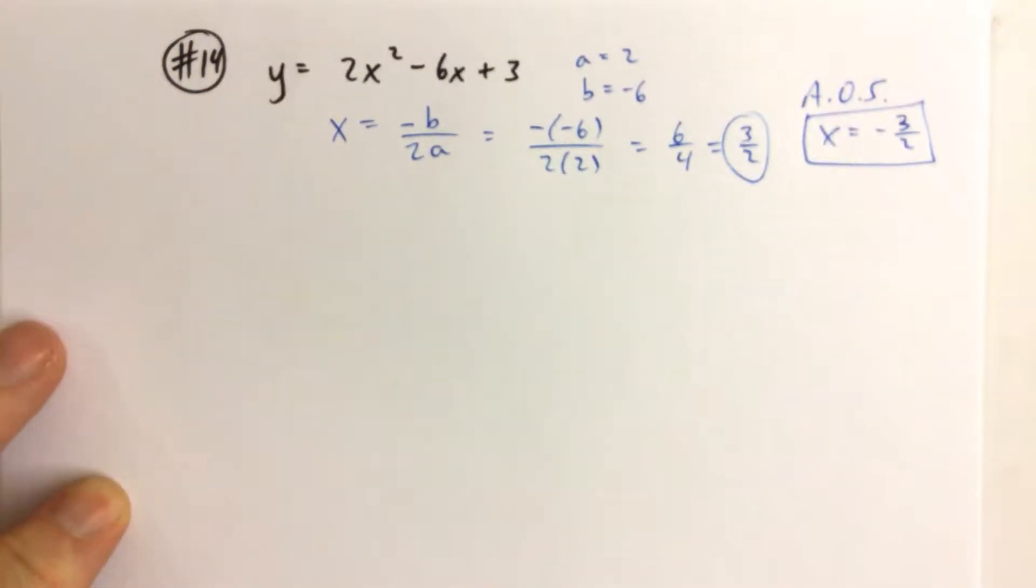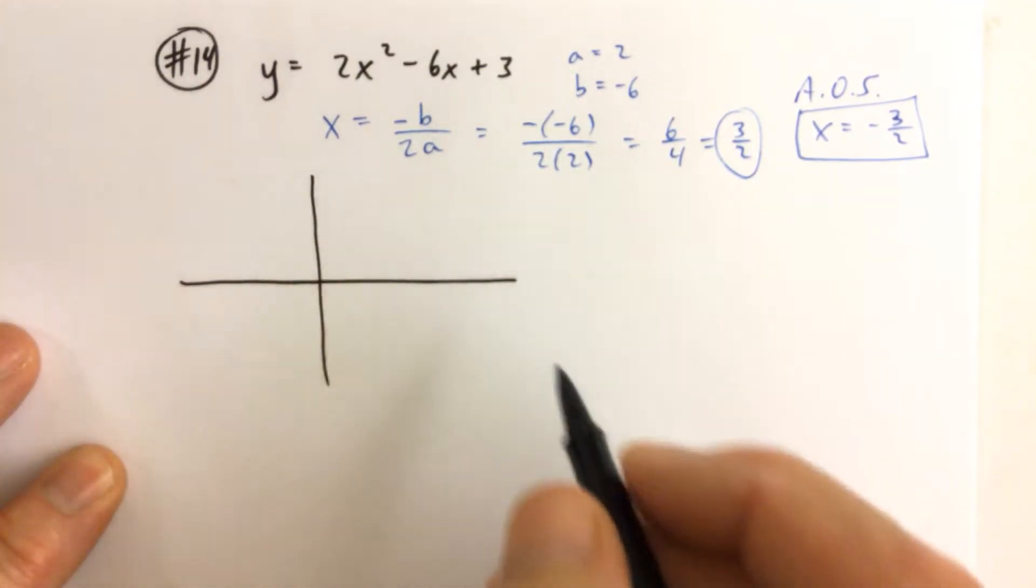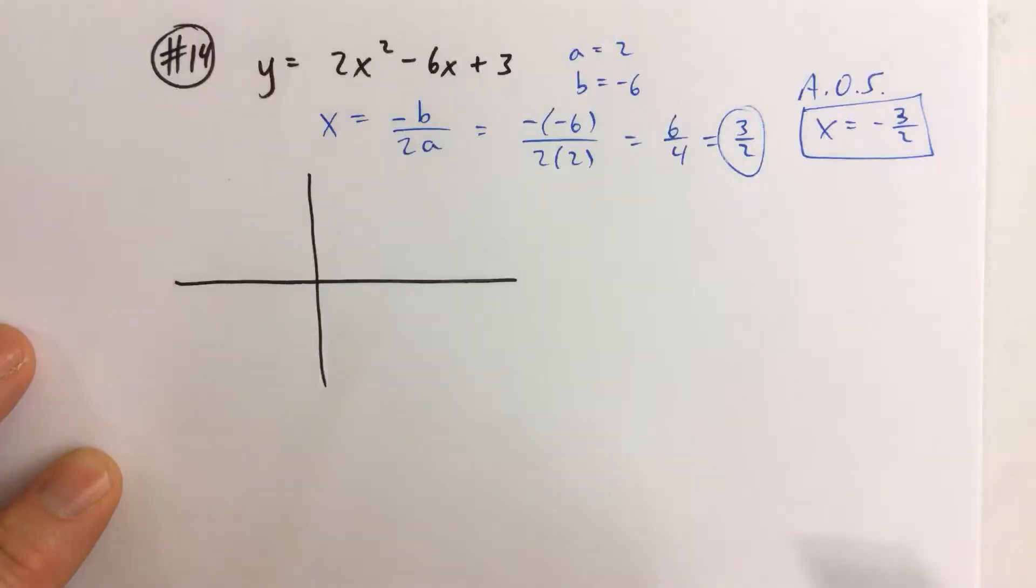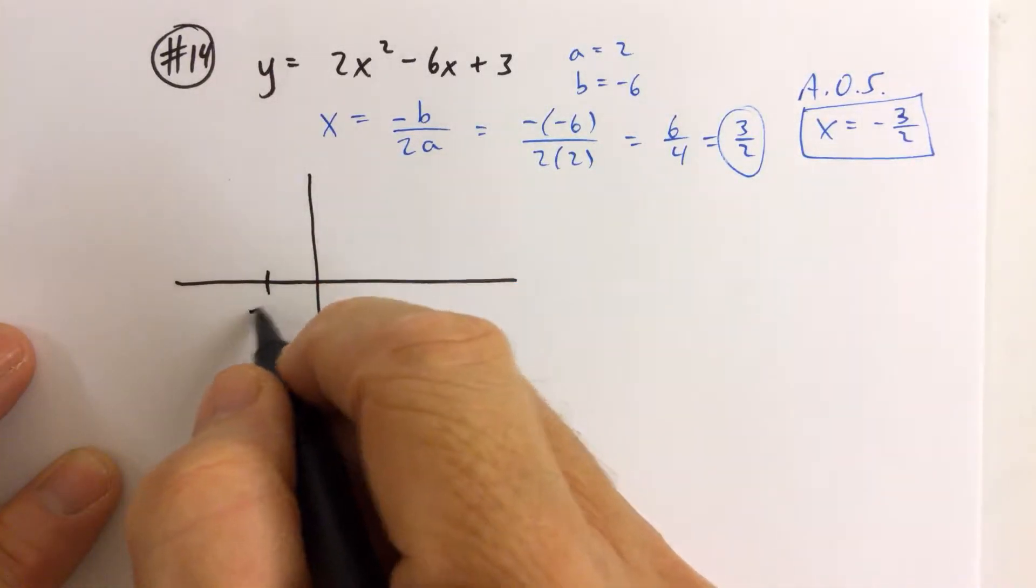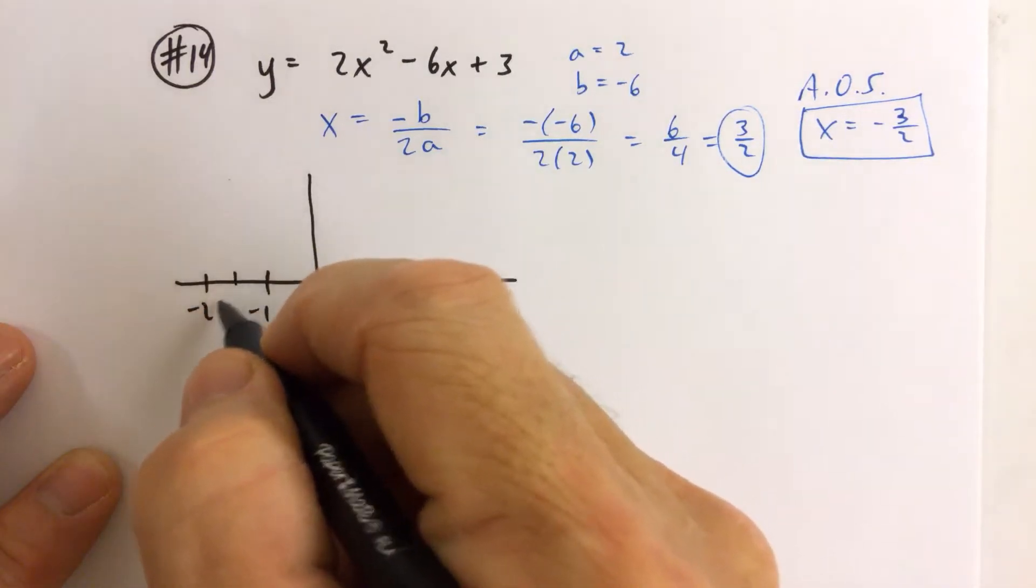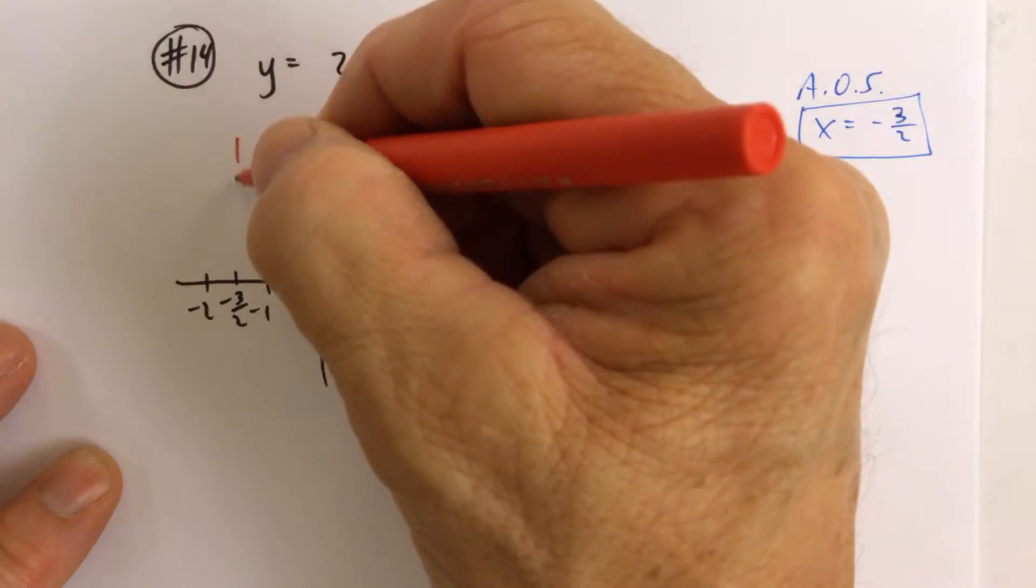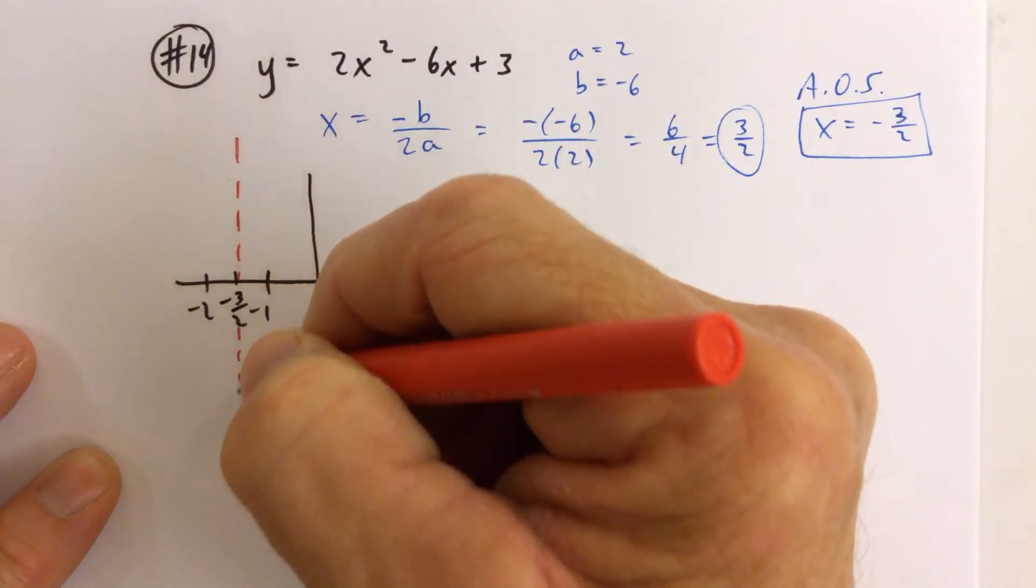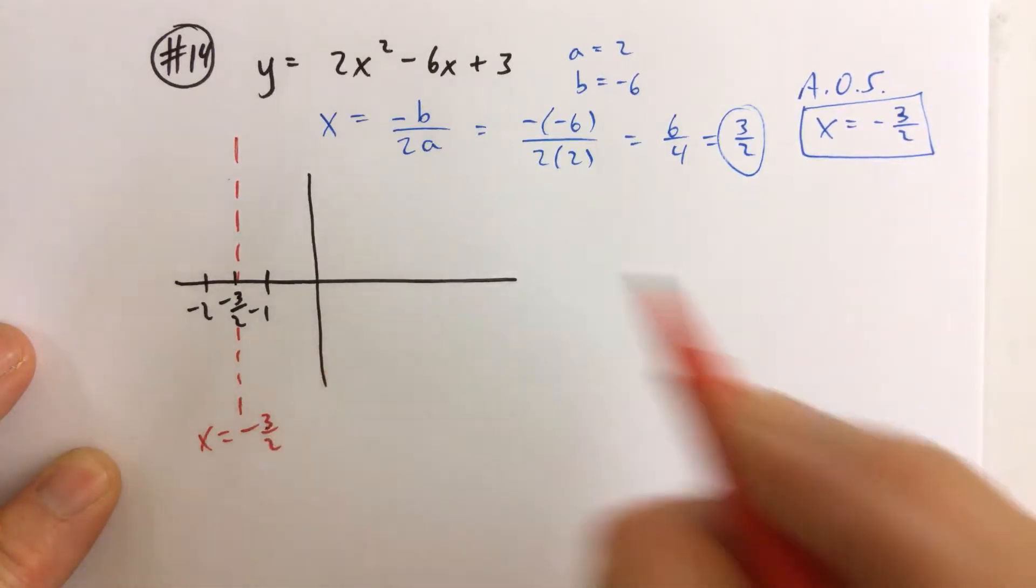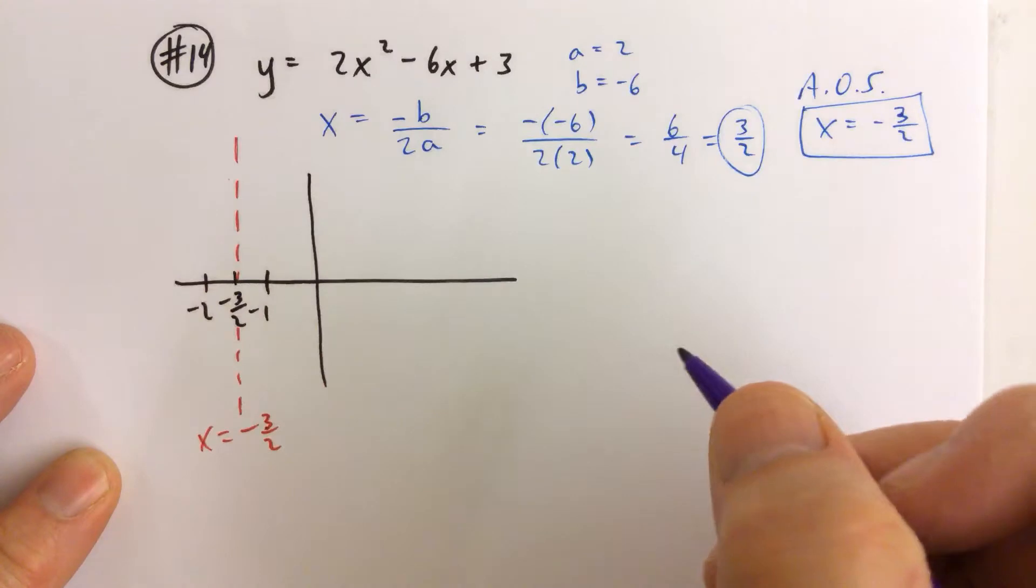Now, if we want to, we can go ahead and draw the graph. x equals negative 3 halves. So we'll go ahead and plot that. There's negative 1, negative 2. Or we could just plot negative 3 halves, negative 1 and a half. And x equals that value. x equals negative 3 halves is our axis of symmetry. So our vertex is on that vertical line.